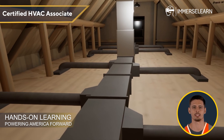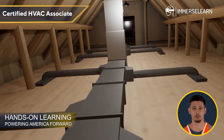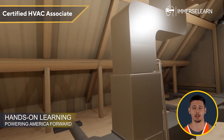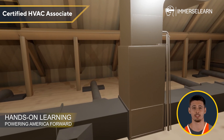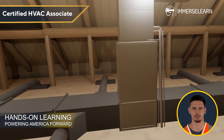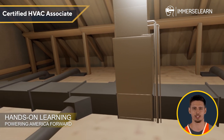Next, we have the extended plenum system, also known as the trunk and branch system. A main trunk duct runs the length of the building, with smaller branch ducts extending to supply outlets. This setup ensures balanced airflow throughout the space.